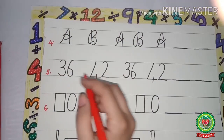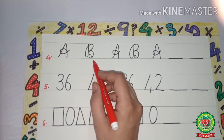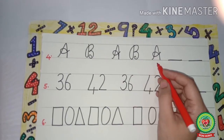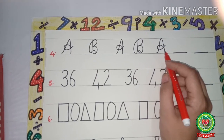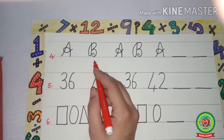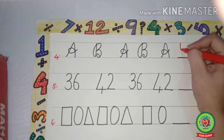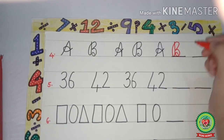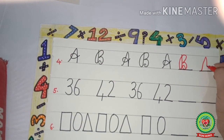Next is A, B, A, B, A. Now again we have to complete the pattern. We will see what is coming after A — after A, B is coming — so we will write B here. And again after B what is coming — A — so we will write A here.